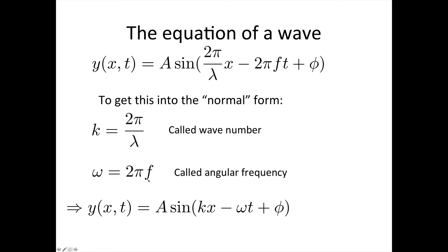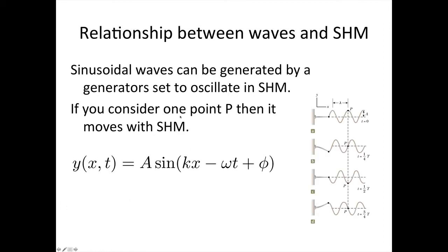2π f is actually called the angular frequency. When we come across circular motion, you're going to see that again — this is going to continue to be an important relationship. Using these two definitions, we can simplify the equation to: y equals A sine of (kx minus ωt plus phi). The relationship between waves and simple harmonic motion — these sinusoidal waves are generated when this end moves up and down with simple harmonic motion, and whenever we consider any point along the wave, it is also moving up and down with simple harmonic motion.